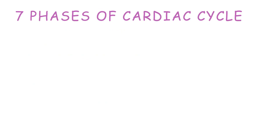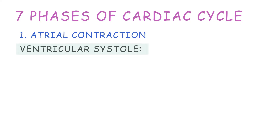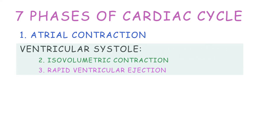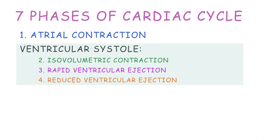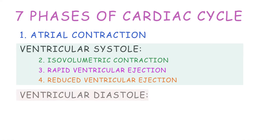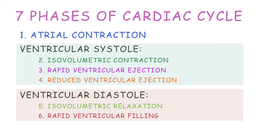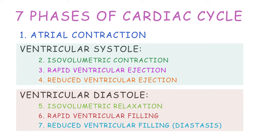The cardiac cycle can be subdivided into seven phases: atrial contraction, then the three phases of ventricular systole — isovolumetric contraction, rapid ejection, and reduced ejection — then the three phases of ventricular diastole — isovolumetric relaxation, rapid ventricular filling, and reduced ventricular filling, also called diastasis.